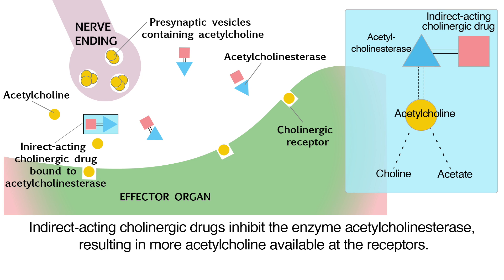Indirect acting cholinergic drugs inhibit the enzyme acetylcholinesterase, resulting in more acetylcholine available at the receptors. These drugs have the added cholinergic effect of improved skeletal muscle tone and strength. Indirect acting cholinergic drugs for Alzheimer's disease are widely distributed, including to the central nervous system, thus improving cholinergic neurotransmission in the brain.